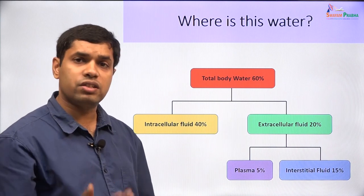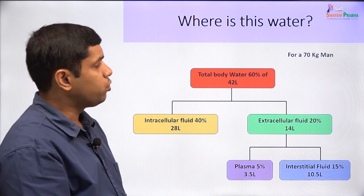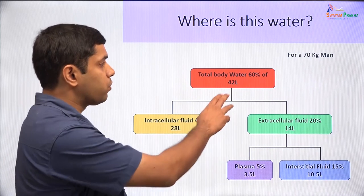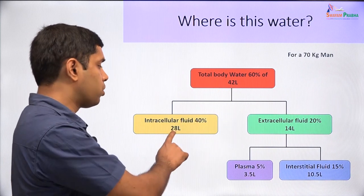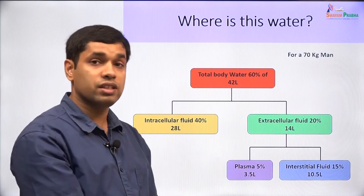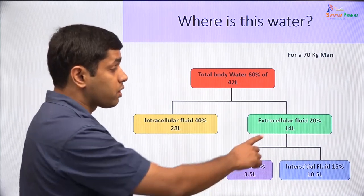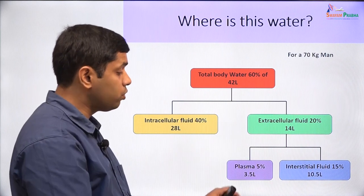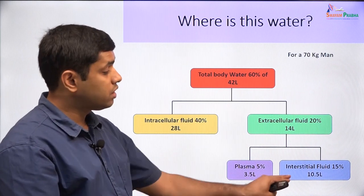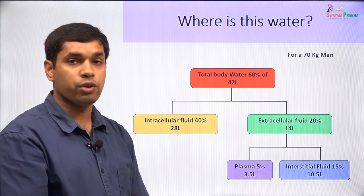Let us look at how this translates into absolute numbers. For a 70 kg adult man, 42 liters would be the total body water, 28 liters in the intracellular fluid, and 14 liters in the extracellular fluid. Plasma will contain about 3.5 liters and the interstitial fluid will contain about 10.5 liters.